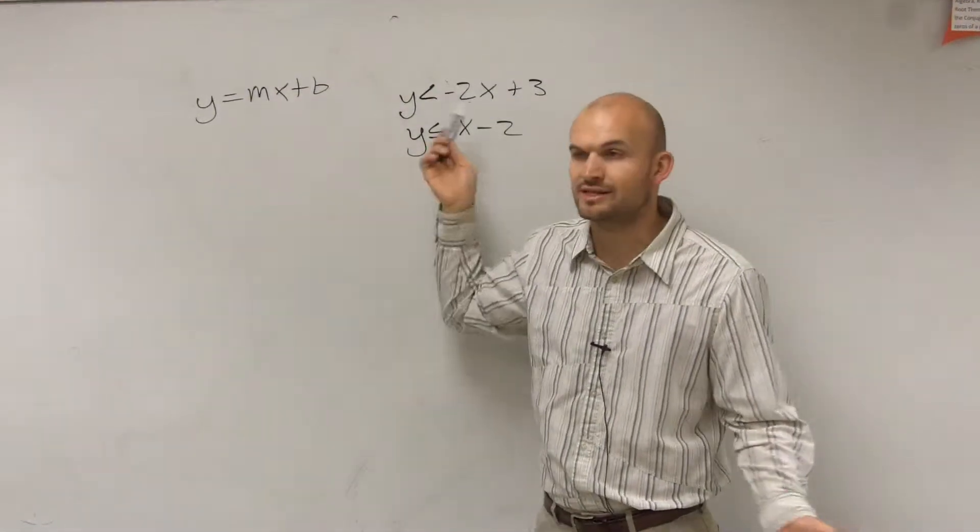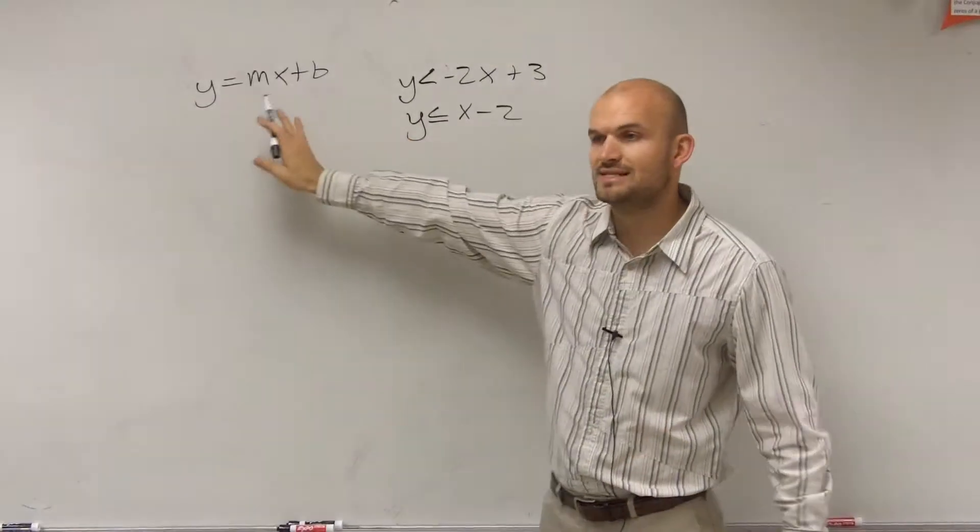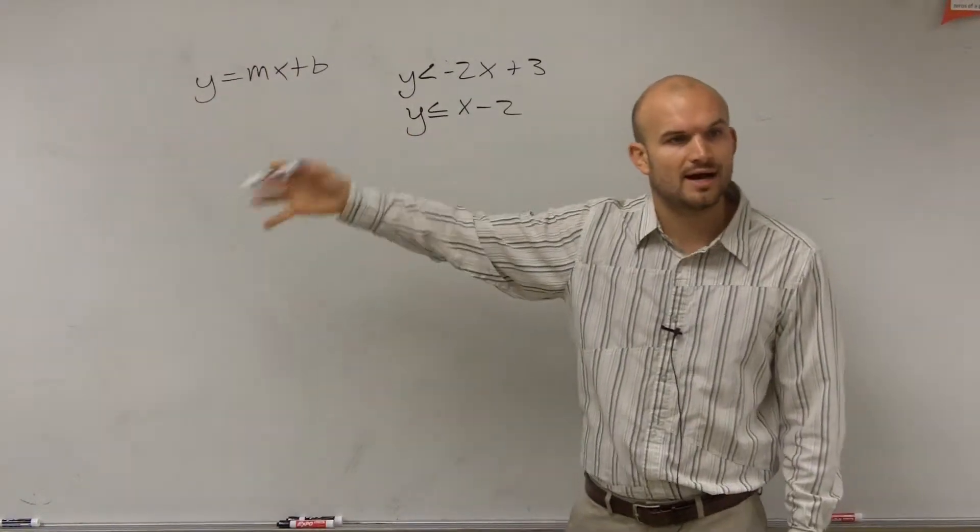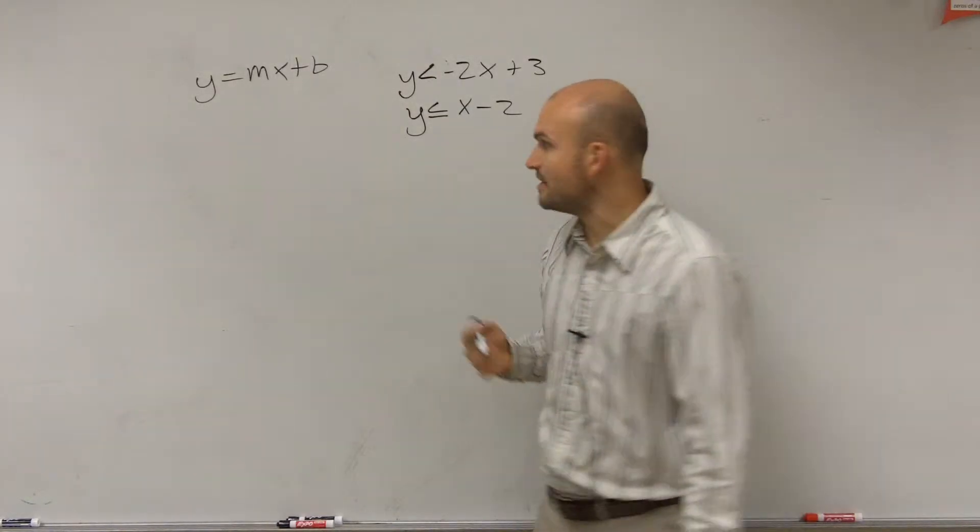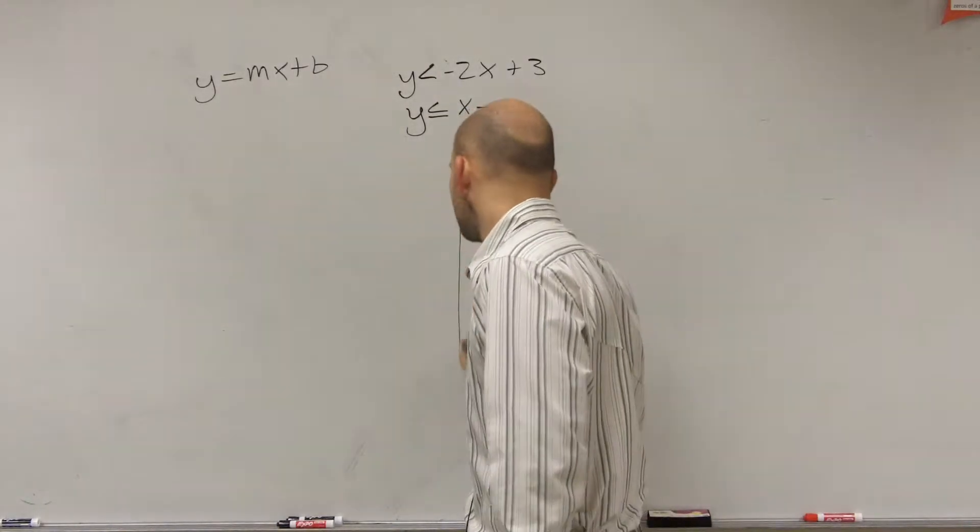However, this is an equation and these are inequalities. However, when it's in this format, when you have it solved for y, we have our important points. We have m as our slope and b as our y-intercept. And that's very important for us to be able to take a look at.